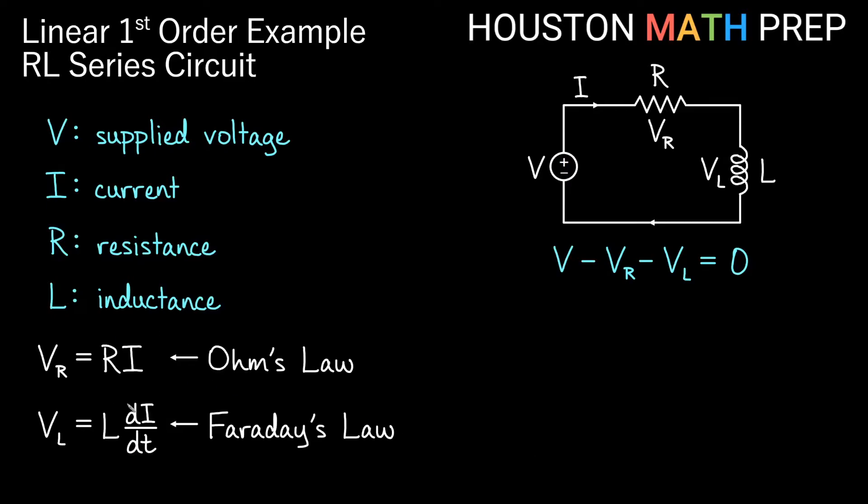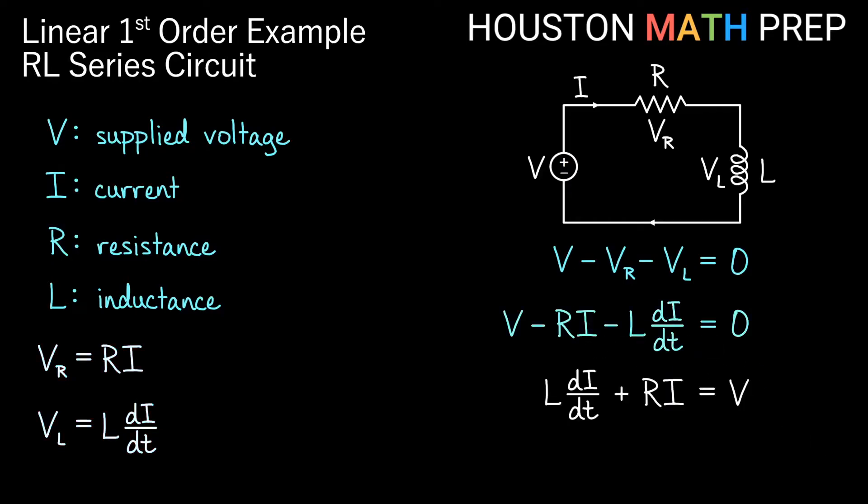So if we plug these ideas into our equation over there, then we get that V minus RI minus L dI/dt is equal to zero. And let's say we move these two terms over to the other side and make them positive, sort of flip this around a bit. We will get L dI/dt plus RI equals V. And this is actually a linear first order differential equation.